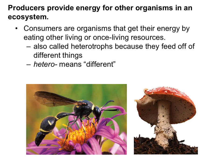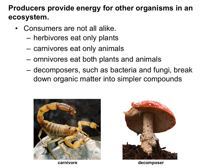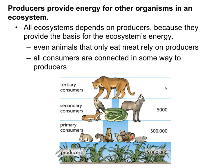Consumers are organisms that get their energy by eating other living or once-living resources. They are also called heterotrophs because they feed off of different things — heteros means different, so they are different feeders, not self-feeders. Within the category of consumer, we have many types: herbivores eat only plants, carnivores eat only animals, omnivores eat both plants and animals, and decomposers such as bacteria and fungi break down organic matter into simpler compounds. All consumers are connected in some way to producers because producers provide the basis for every ecosystem's energy.